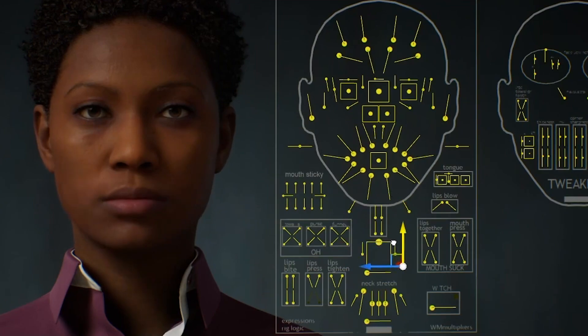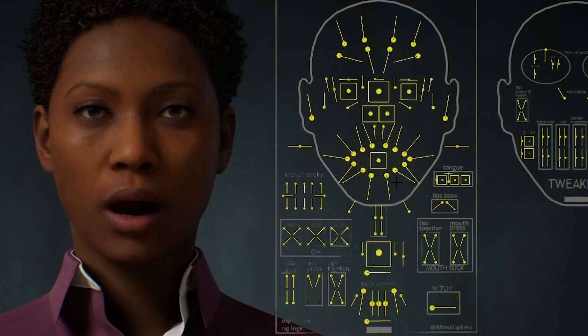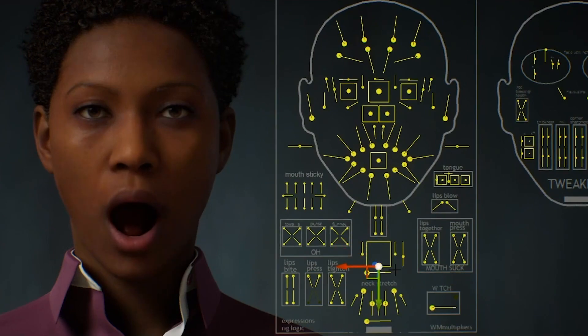These are controlling just the facial muscles of our characters. This character you can download via Unreal Engine Marketplace and his name is MetaHuman Sample Project. This is for free.